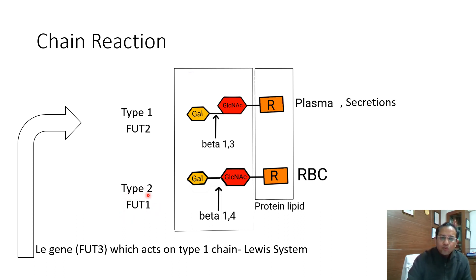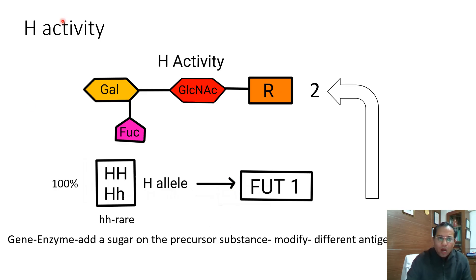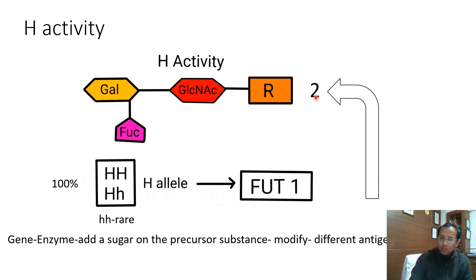To remember it: type 2 chains use the FUT1 gene, type 1 chains use the FUT2 gene. I have explained this in my earlier session on ABO synthesis. Just to appraise you — on the precursor type 2 chain, which has a beta 1-4 linkage, whenever a person has at least one capital H allele, they produce the FUT1 enzyme — fucosyltransferase 1 — which acts on the type 2 chain and adds a fucose sugar, giving rise to the H antigen.